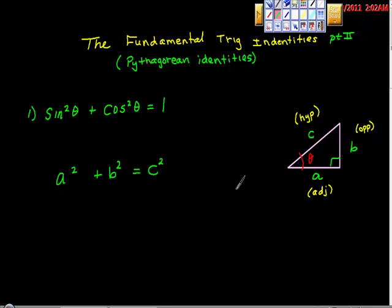I'm going to prove this out, and before I do, I just want to answer the question — maybe the question is why. Why do you care? Because we're going to be asked to prove some identities. So what we're going to do is start with this right triangle. Here's the Pythagorean theorem. I want to remind you that B is opposite, if this is theta, this is adjacent, and this is the hypotenuse.